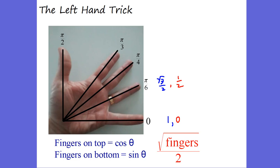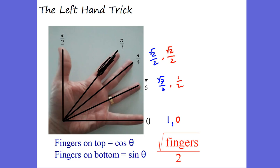At 45 degrees or pi over four, you have two fingers on top: square root of two over two. And two fingers on the bottom: square root of two over two. So cosine and sine of pi over four are both root two over two. At pi over three, only one finger on top: square root of one over two equals one-half — that's cosine. Three fingers on the bottom: square root of three over two — that's sine of pi over three.